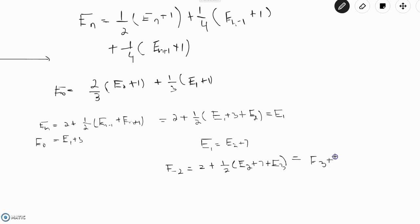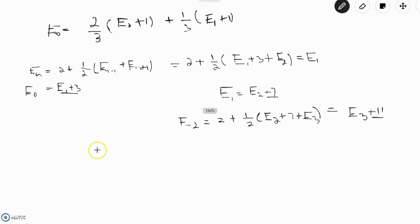And we notice that the constant terms are changing at each time. So first we started out with 3, then we have 7, now we have 11. So we conjecture that E(n) is simply equal to E(n plus 1). And since the common difference is 4 and our initial condition is 3, it would be plus 4n plus 3.